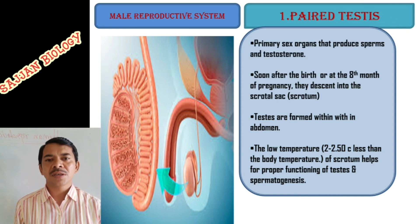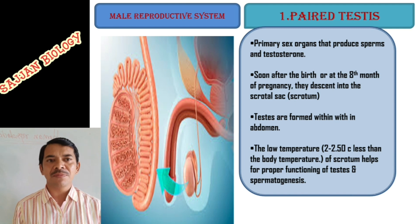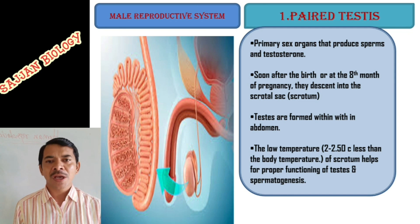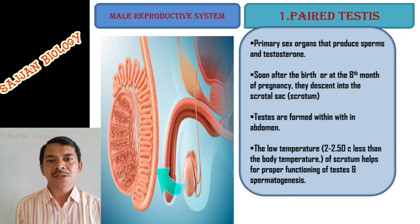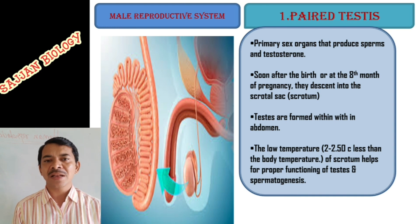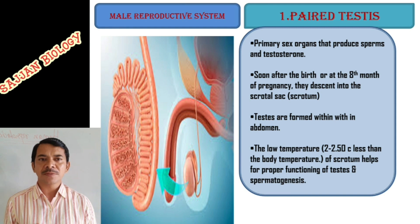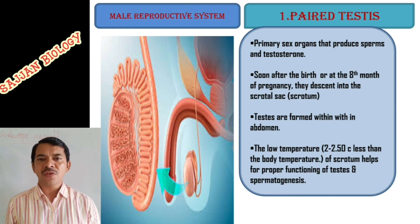The testes are considered as primary sex organs. We call them primary sex organs because they produce sperms and also the male hormone called testosterone. Testosterone is very important to maintain secondary sexual characteristics in males. Collectively, these testosterone hormones are called androgens.